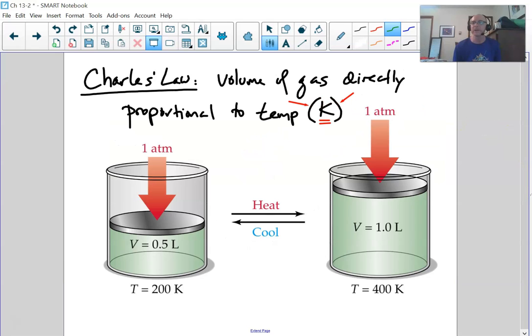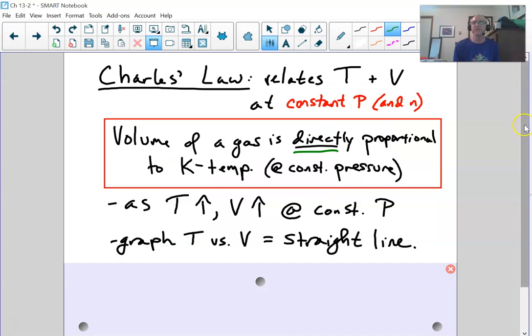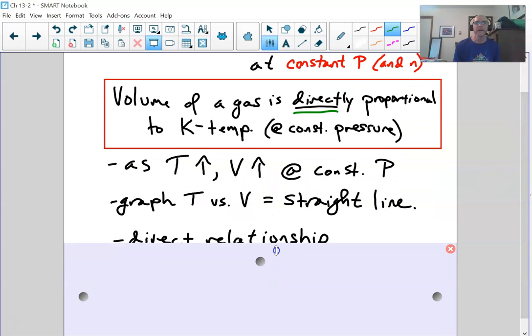In a direct proportion, if you increase temperature, you increase volume. Heat up a gas, it's going to expand. If you take a look at this cartoon version, here's temperature is 200 degrees Kelvin. If I double the temperature to 400 degrees Kelvin, I double the volume from half a liter to a full liter. Notice atmospheric pressure is constant, and we are doing our temperatures in Kelvin.